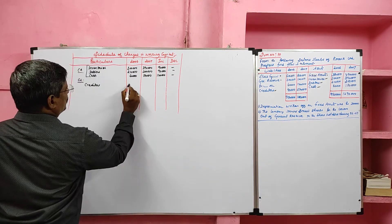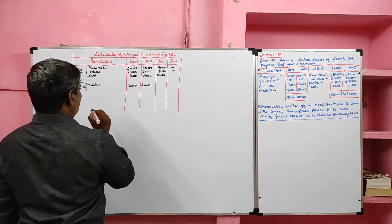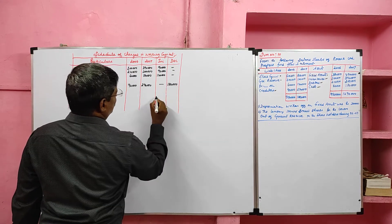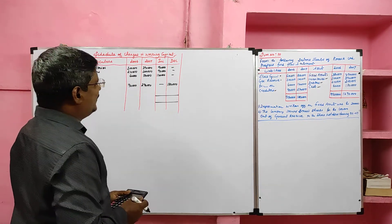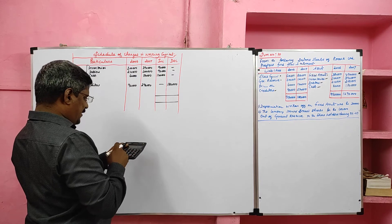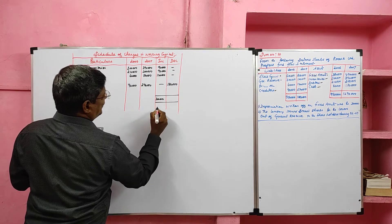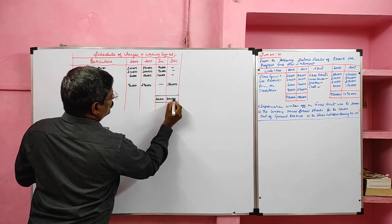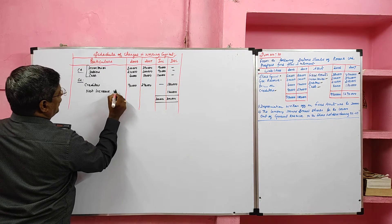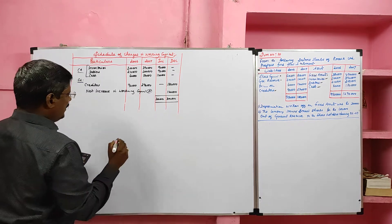Current liability: creditors — opening balance 90,000, closing balance 2 lakh 17,000 — an increase in creditor, which is an increase in current liability, results in a decrease in working capital of 1 lakh 80,000. To find net increase or decrease in working capital: the increase side is heavier. Total increase side: 90,000 + 90,000 + 1 lakh 20,000. The gross increase exceeds the gross decrease; the difference of 1 lakh 20,000 is the net increase in working capital, which goes to the application side of the fund flow statement.